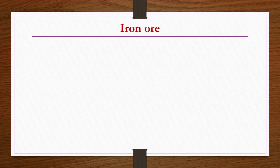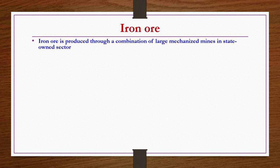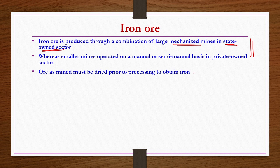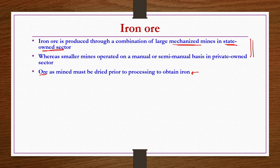Now we start with iron ore purification or concentration. Iron ore is produced through a combination of large mechanized mines in the state-owned sector and small-scale semi-mechanized sectors owned by the private sector. Ore that is mined must be dried prior to processing to obtain iron, because ores from natural resources are damp in nature. So they have to be dried before further processing.